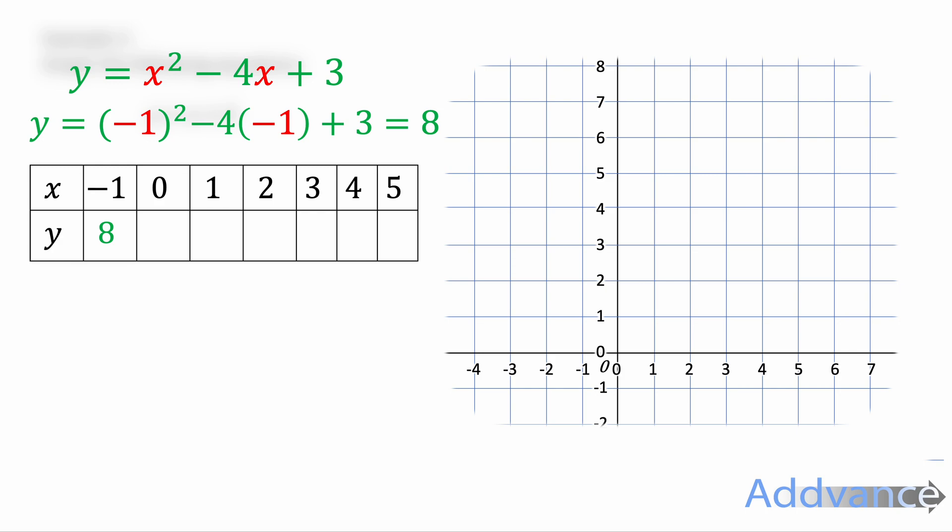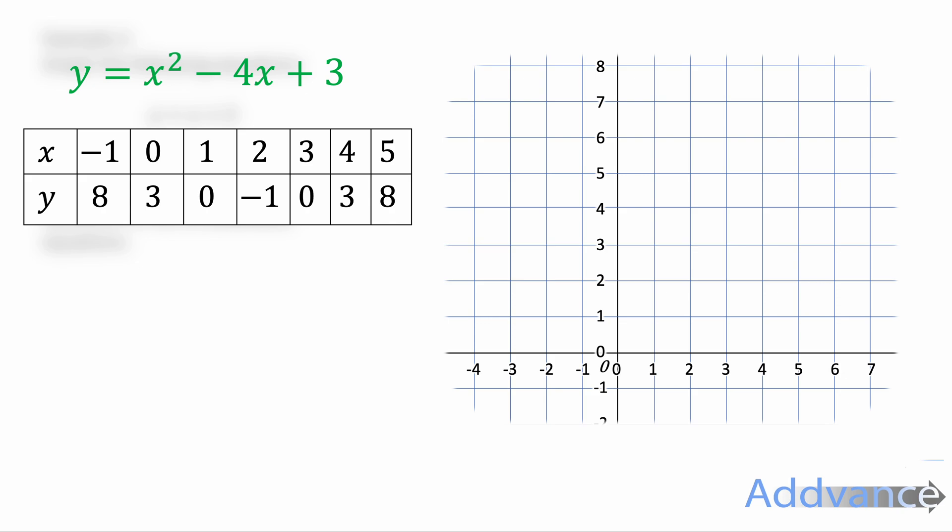I can now repeat that with the other x coordinates: x equals 0, x equals 1, 2, 3, 4, and 5. And I will get this table of values here. You can try that in your own time, but in the interest of speed I've just done that for you. I now have a bunch of coordinates. And so if I look at this, the coordinates from this table I give them below.